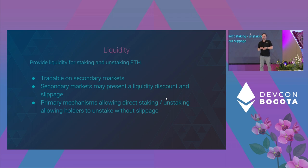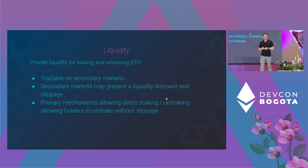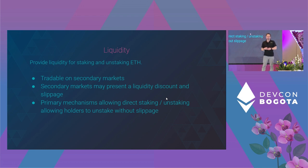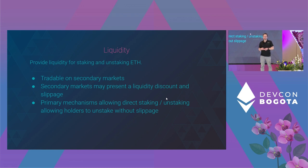Liquidity. By tokenizing staked ETH it can be traded on secondary markets such as exchanges. This provides liquidity for people to unstake their ETH. The price you pay on secondary markets is dictated by the market, so it may present a liquidity discount or potentially a premium. With large orders there can also be slippage. Staking protocols can offer a primary mechanism for unstaking ETH, allowing liquid staking token holders to actually swap back without the discount and without the slippage. Both of these mechanisms of unstaking reduce the need for validator churn.